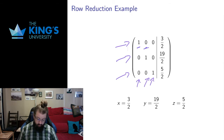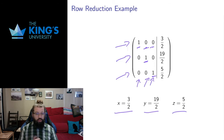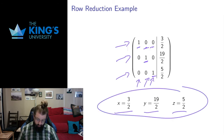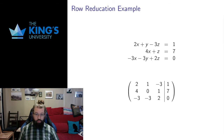And this is a form I can just read off the solution. This says x plus no y's plus no z's is 3 halves. This says y is 19 halves. And this says z is 5 halves. That's what reduced row echelon form does — it gets us to a matrix that we can interpret in terms of what the solution is. In this case, the system is solved by these coordinates.